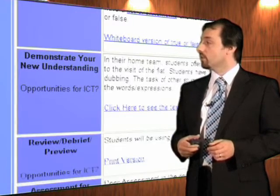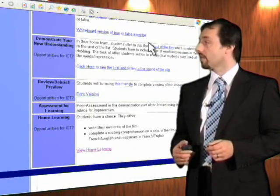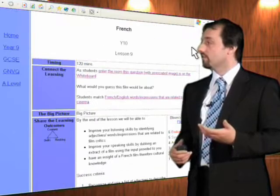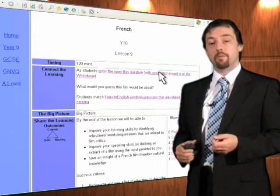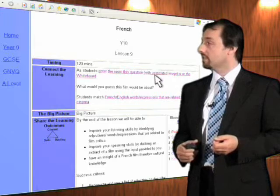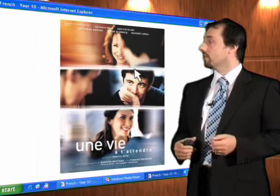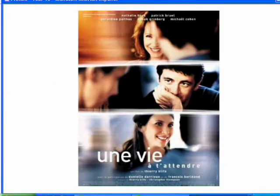Additional sections include assessment for learning and home learning that we've added in. But the reason this online lesson plan has proved so successful with staff is that all of the resources they need are available at the click of a hyperlink and they're embedded within the lesson plan. Here, as students enter the room, the teacher clicks on this and the resource, the visual resource in this case, is available on the interactive whiteboard full screen so all of the students can see it.